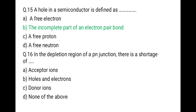The next question: in the depletion region of a PN junction there is a shortage of what? The correct option is holes and electrons, because in the depletion region there are only immobile ions. So the correct option is holes and electrons.